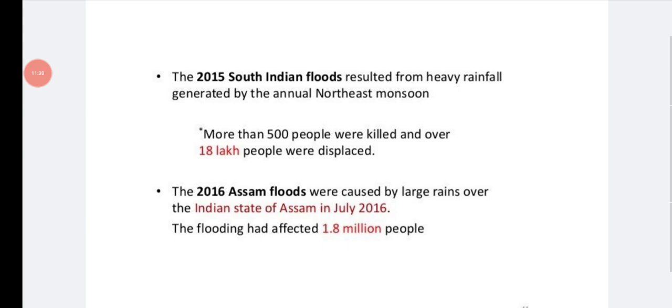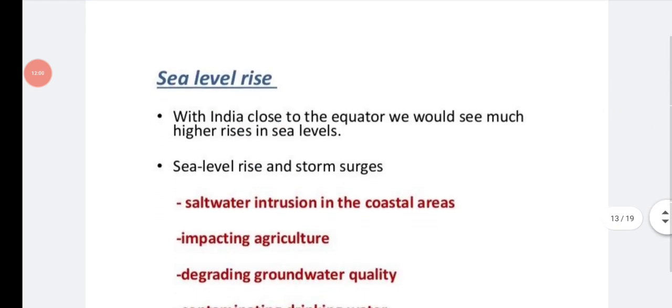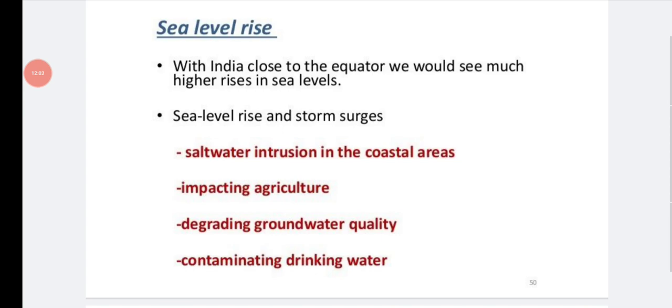And this resulted in crop production was reduced and major investment in water storage capacity would be needed. More building of dams or water bodies, for this huge investments are needed. And sea level rise, storm surge, that results in salt water intrusion in the coastal area, impacting agriculture, degrading groundwater quality and contaminating drinking water. The sea level rise and it enters the coastal area and this results in the problem with agriculture, water bodies and drinking water.